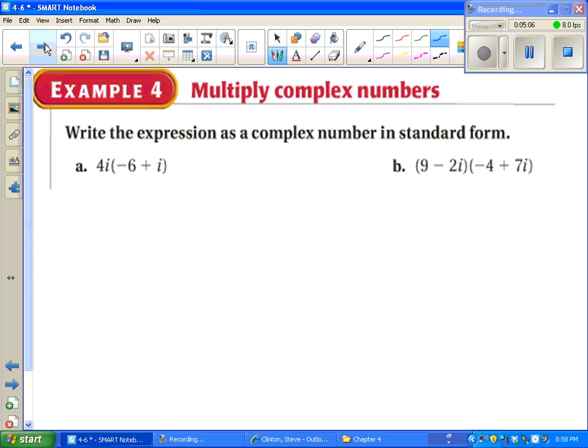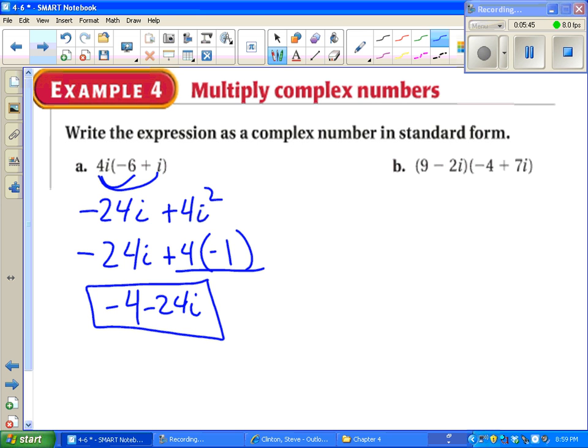Now we're going to multiply. I told you you wouldn't have to worry about it for at least a couple slides. Multiplying is not too bad. It starts off exactly like you'd want it to. 4i times negative 6, negative 24i. 4i times positive i is 4i squared. The part where this gets tricky is we don't want the i squared. If you go back to the very first slide where I told you what i squared was equal to, you might remember that i squared is always equal to negative 1. So this is really negative 4 minus 24i. And you have to go that extra step to be considered done.